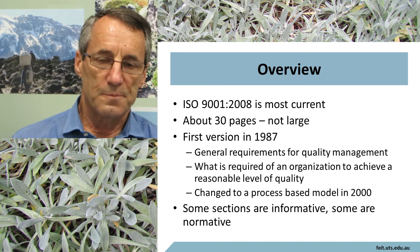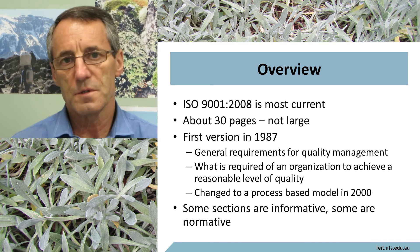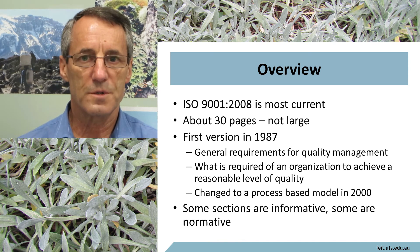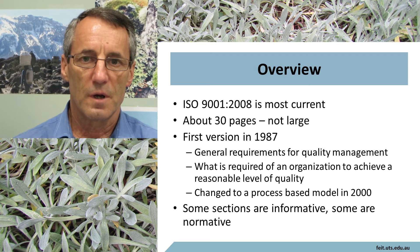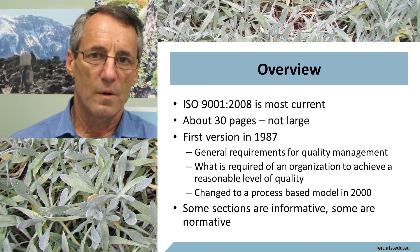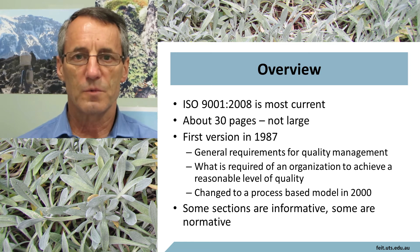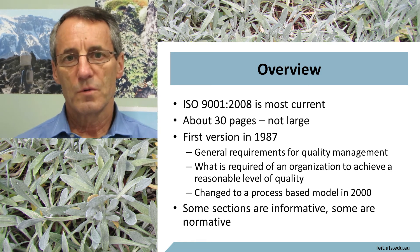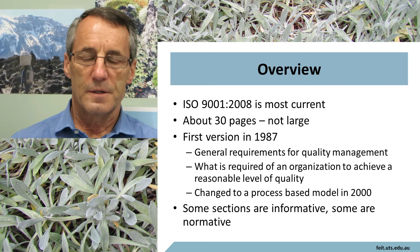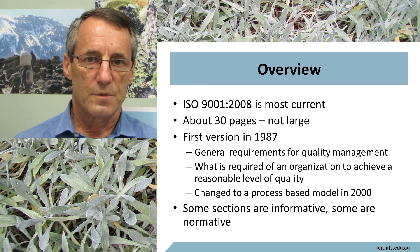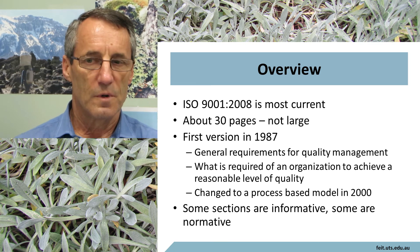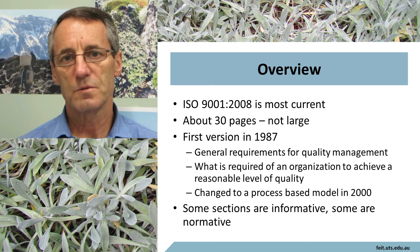I think it first came into existence in 1987 as a general standard for quality management systems. There seemed to be a need at the time for some general worldwide agreement on what an organization would have to have in place and what kind of thing we need to do in order to claim to be doing things to an acceptable level of quality. At that time, it was a collection of requirements — I think there were something about 20 requirements. But in 2000, it changed around to a process-based model.